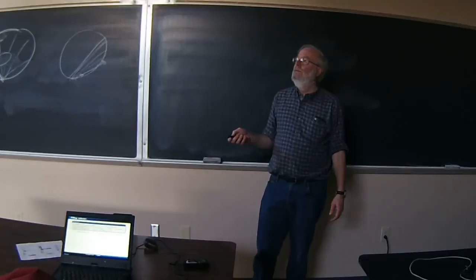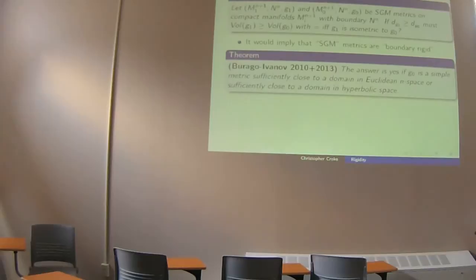This filling volume question is actually how Burago and Ivanov proved that simple metrics sufficiently close to Euclidean n-space are boundary rigid. They proved that for any other metric with bigger distance functions, the volume is bigger — with equality if and only if isometric.